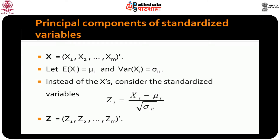It is easy to show that the correlation matrix rho would have eigenvalues, the largest of which is lambda 1 equal to 1 plus (m minus 1) times rho — of course, rho has to be positive for this to be the largest. All the remaining m minus 1 eigenvalues, from lambda 2 to lambda m, would be equal to 1 minus rho. So you have a multiplicity of m minus 1 eigenvalues equal to 1 minus rho, and a single one, lambda 1, which is larger than the others.